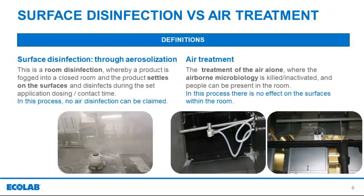Today we are talking about applications where products are applied as aerosols, of which there are two — these being very distinct from each other with completely different outcomes. First, surface disinfection through aerosolization, often referred to as fogging, is a Phase 2 Step 2 method where the product is fogged into a closed room in the absence of personnel, where it settles onto the surfaces and disinfects during the application contact time. Time is also factored in to ensure that biocide levels in the room are at a safe level to allow for re-entry. During this application, no air treatment can be claimed as defined by the standard.